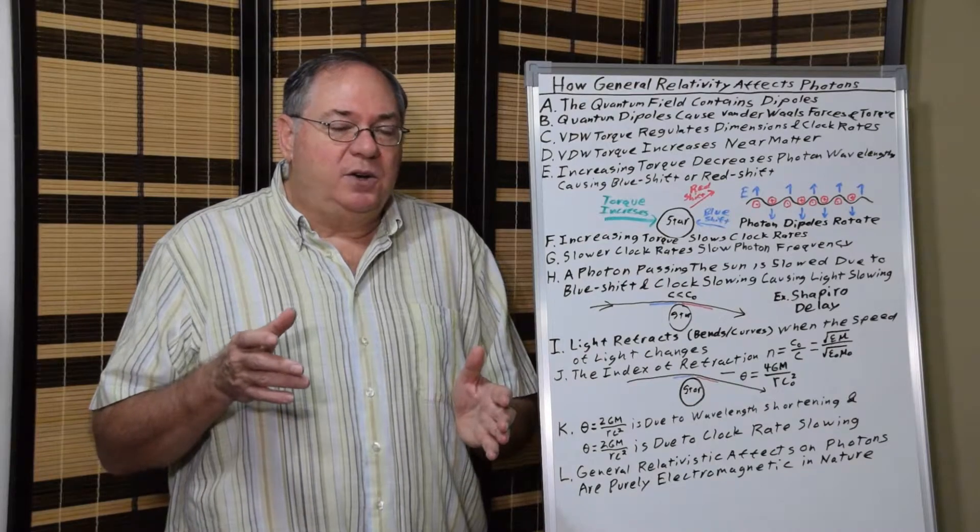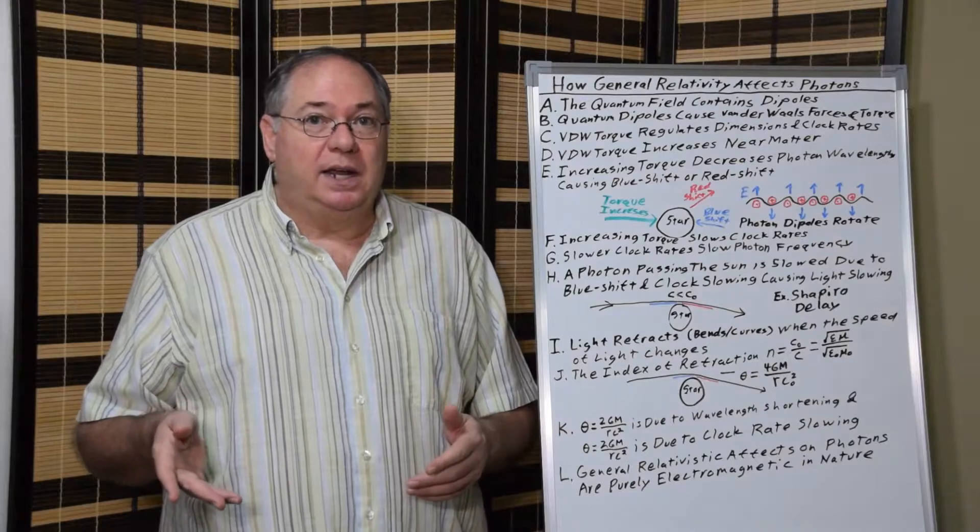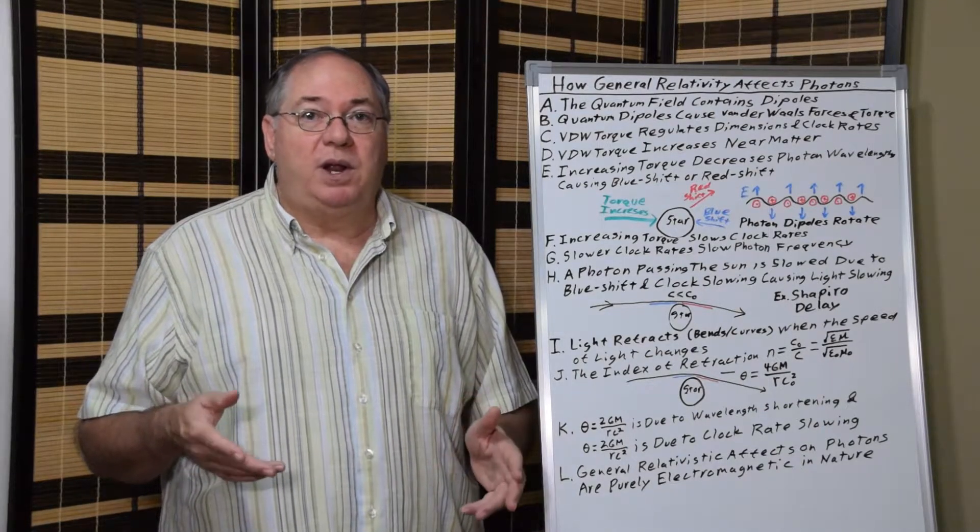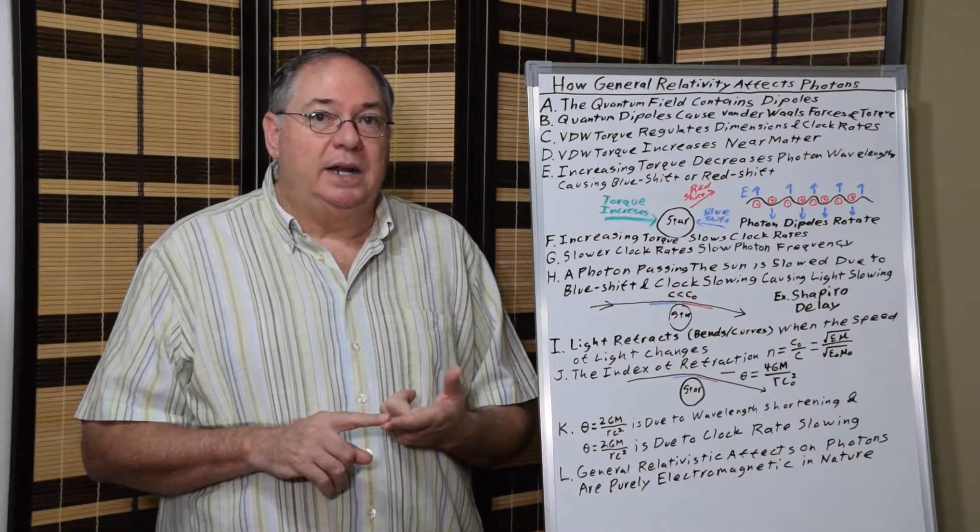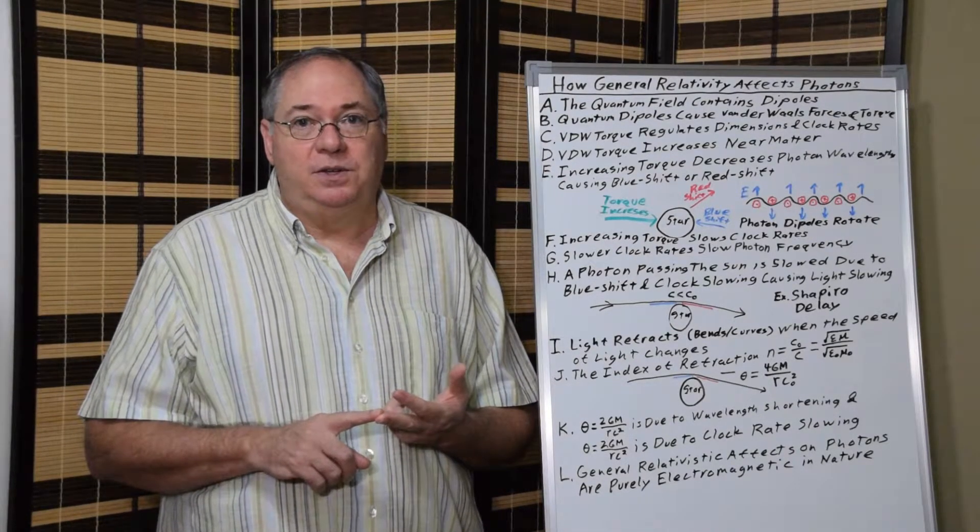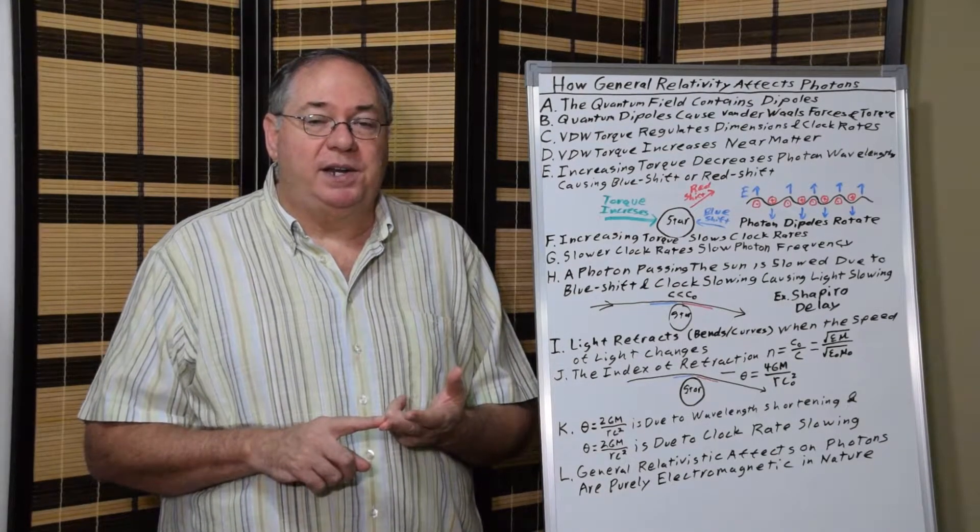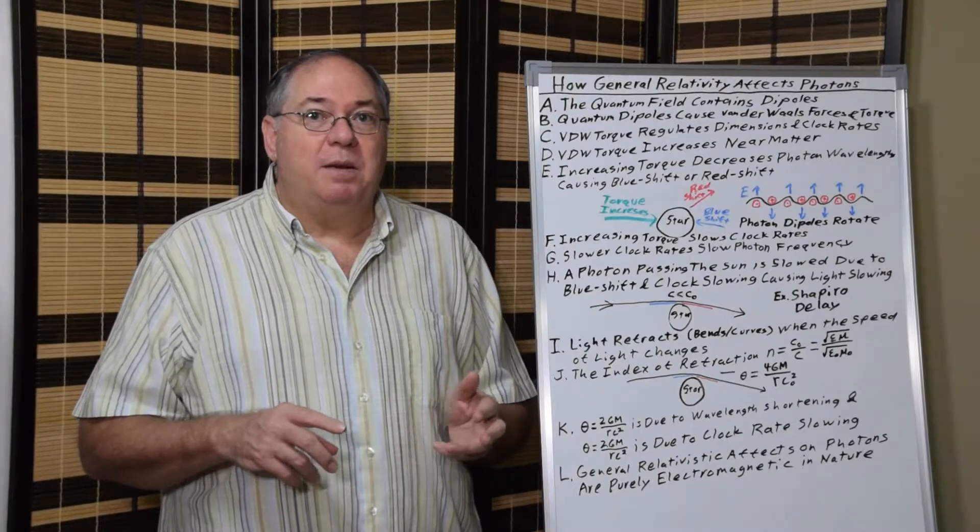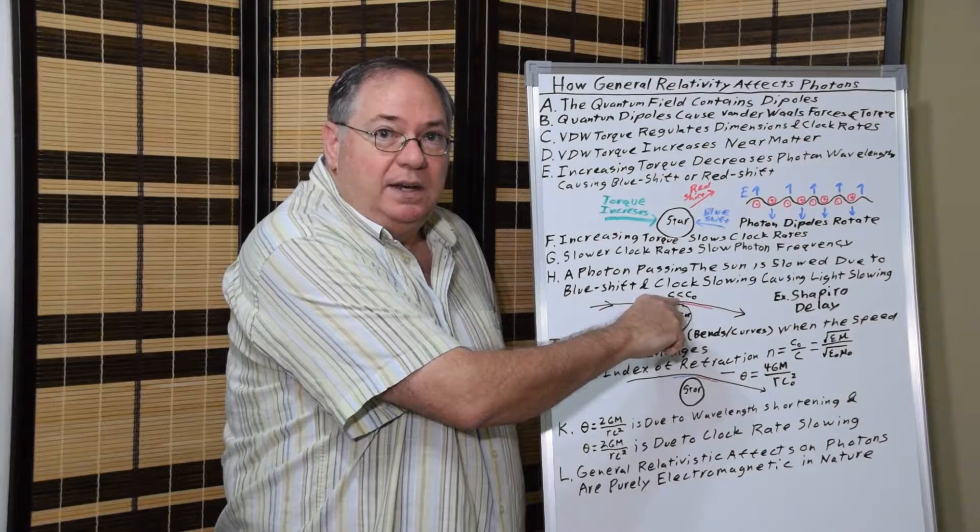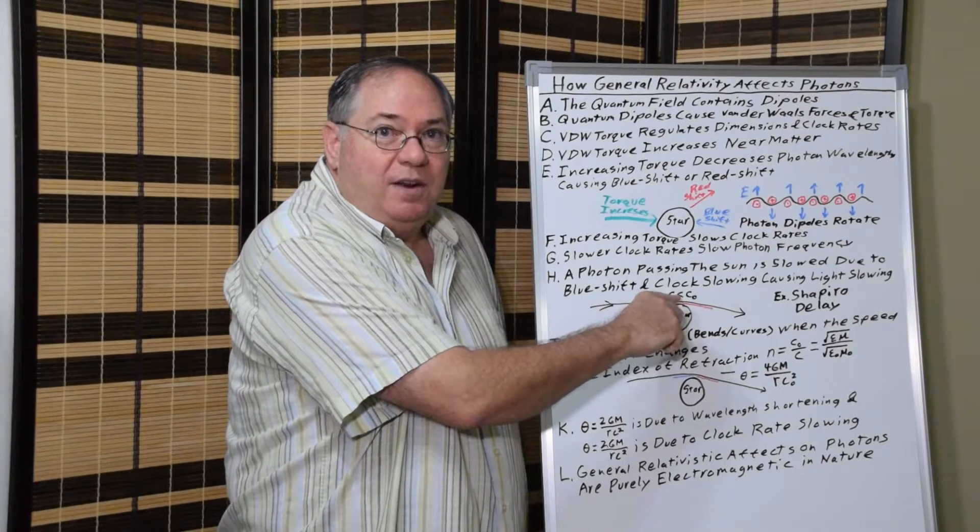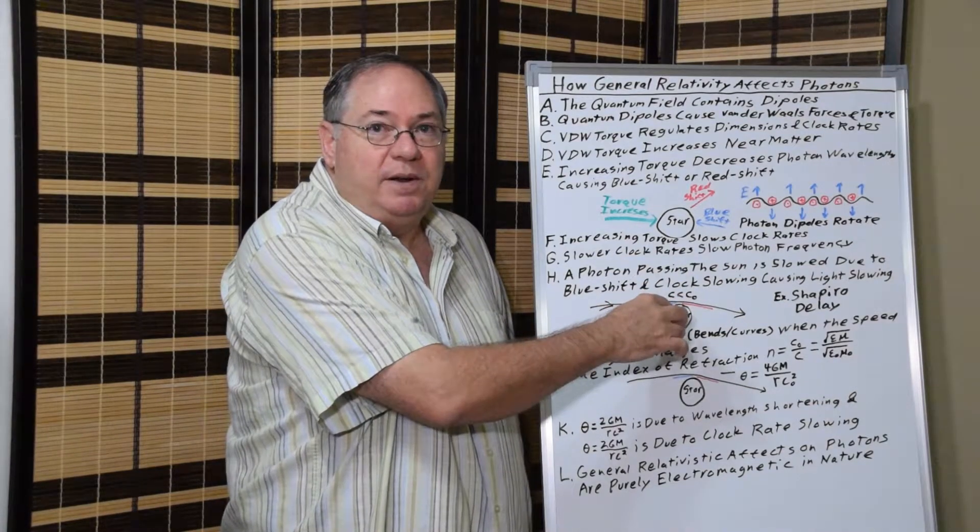That's an additional slowing effect that relates to the slowing of light. In terms of the proofs of general relativity like the Shapiro delay, the slowing of light is known to have two components: one that's related to the wavelength changing and the other to the frequency slowing, the clock rate changing.